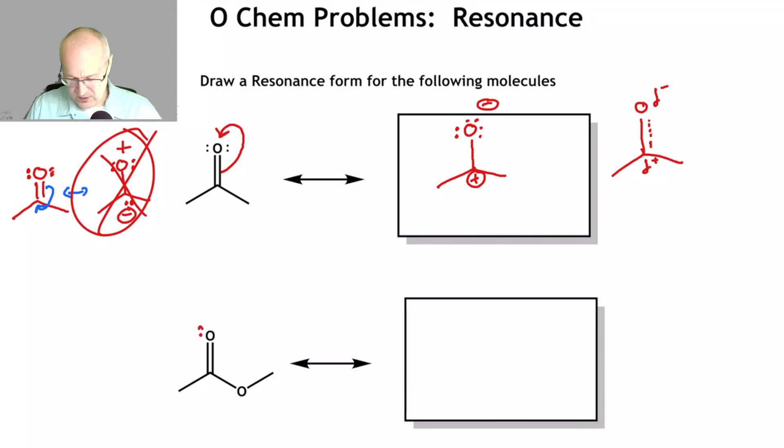So, this one here, don't forget there's lone pairs here and here. And here and here. Now, you can do this resonance form in a couple of steps. I'm going to show them to you in two steps. You could just take this pi bond, move it up to here, just like we did here. Nothing wrong with that. Nothing wrong with that. Okay? And now we have a contributor with a sextet at carbon. Nothing wrong with that. Nothing at all wrong with that.